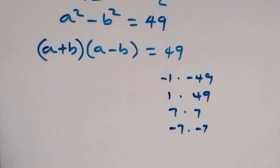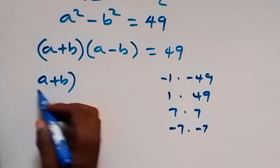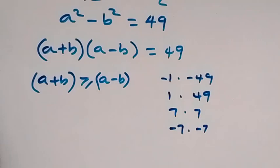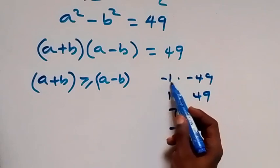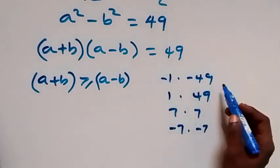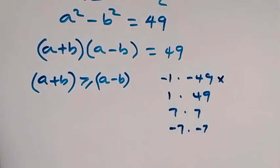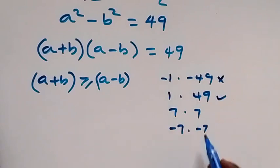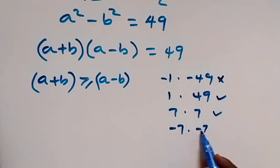We said a and b should be members of the natural numbers, and a + b is greater than or equal to a - b. The first case — negative times negative — is not a member of the natural numbers, since natural numbers are positive (1, 2, and so on), so those give negative results and will not be considered. We consider positive 1 times 49, and also 7 times 7 since those are natural numbers. Minus 7 times minus 7 will also not be considered.